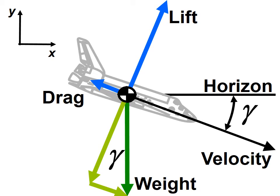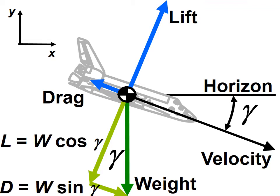We want to sum the forces parallel and perpendicular to the velocity vector, so we break up the weight into components in those directions. Since this is a stabilized, non-accelerating glide, the forces in each direction must be in balance.